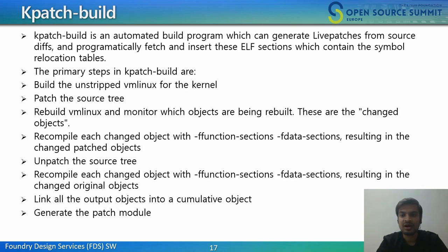So now, kpatch build. Kpatch build is an automated build program which can generate livepatches from source diff and programmatically fetches and inserts these ELF sections containing the symbol relocation table. Kpatch build is a collection of tools which converts a source diff patch to a patch module. It works by compiling the kernel both with and without the source patch, comparing the binaries, and generating a patch module which includes new binary versions of the functions to be replaced.